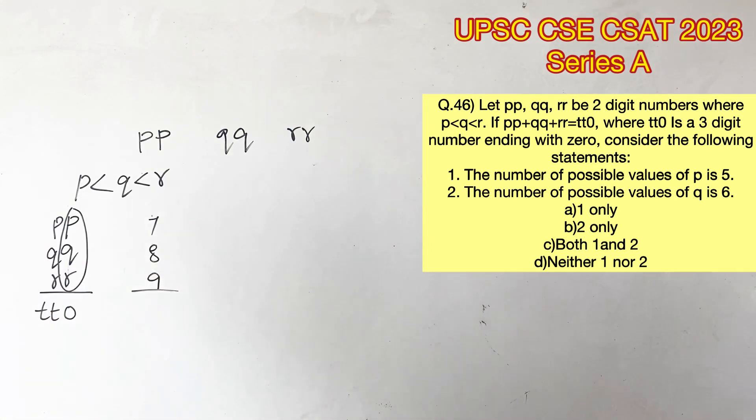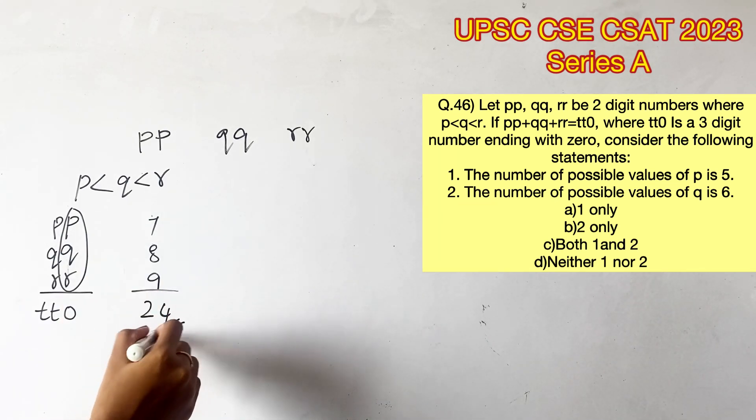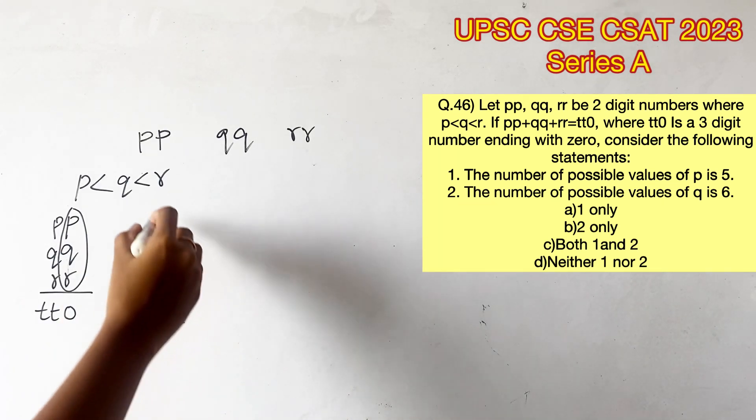Let's take the highest value possible for these numbers. That will be 9, 8, and 7, because clearly R should be greater than Q and Q should be greater than P.